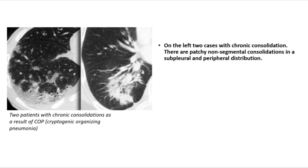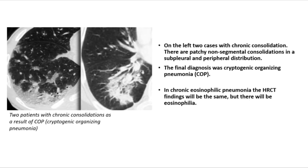Two cases with chronic consolidation show patchy non-segmental consolidations in a subpleural and peripheral distribution. The final diagnosis was cryptogenic organizing pneumonia (COP). In chronic eosinophilic pneumonia, the HRCT findings will be similar but there will be eosinophilia. Bronchoalveolar carcinoma can also have a similar appearance.